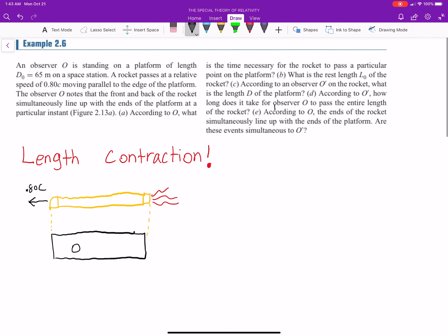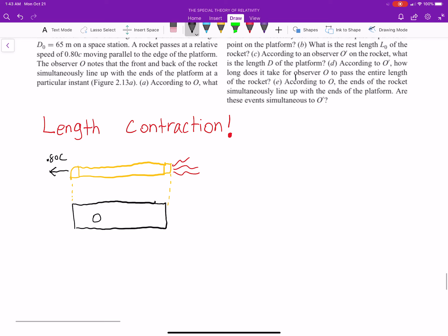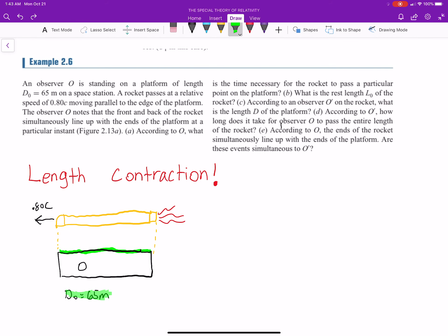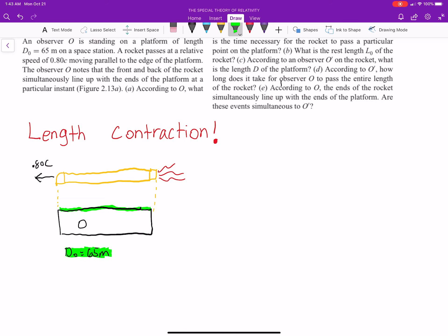Okay, now it mentions that the proper length, d-naught, of this deck - this green part that I'm highlighting - that's d-naught, is 65 meters. Now real quick, do we remember why that's the proper length? Well, we ask ourselves: the proper length is where that object that we're measuring is at rest. And from O's point of view, the dock is at rest. So that is why we would consider that the proper length.